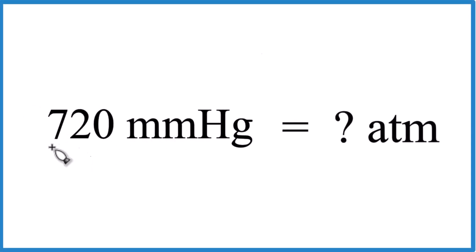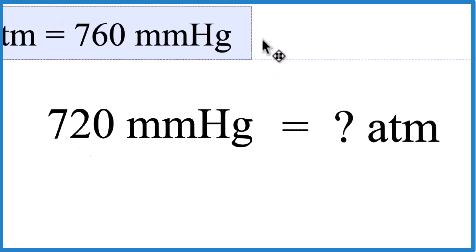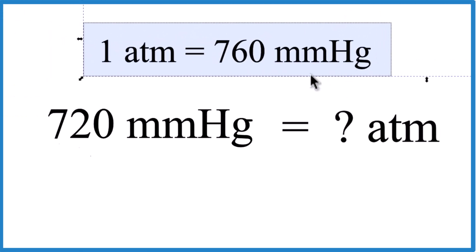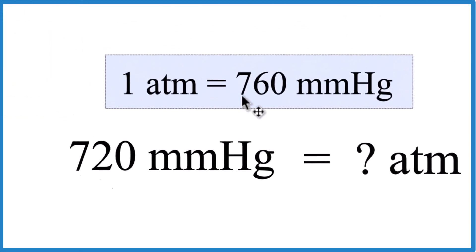If you need to convert 720 millimeters of mercury to atmospheres, here's how you do it. What you need is a conversion factor. You either memorize this or you look it up. One atmosphere equals 760 millimeters of mercury.